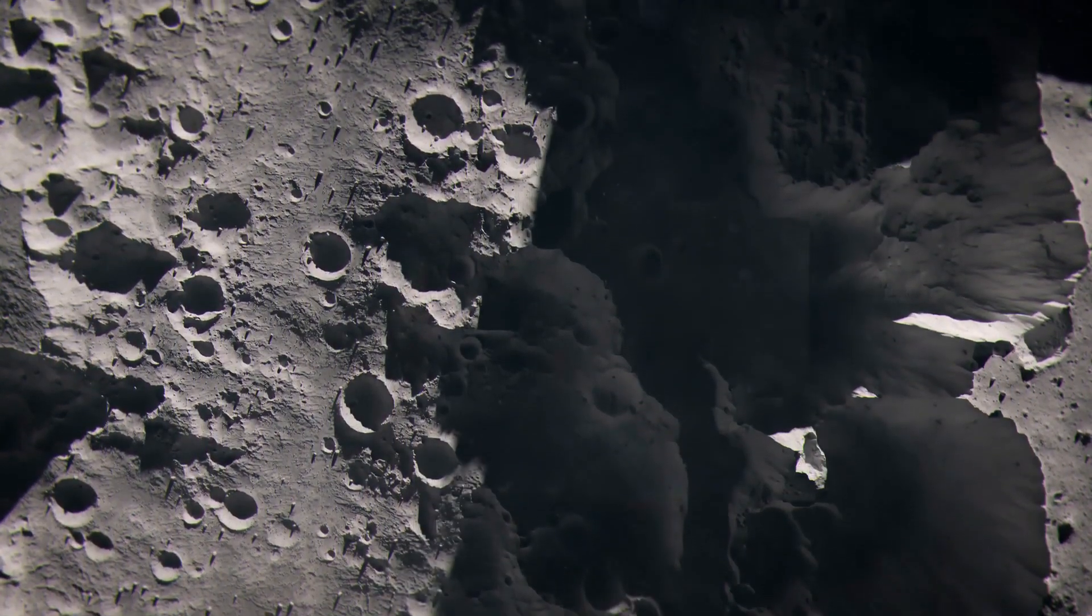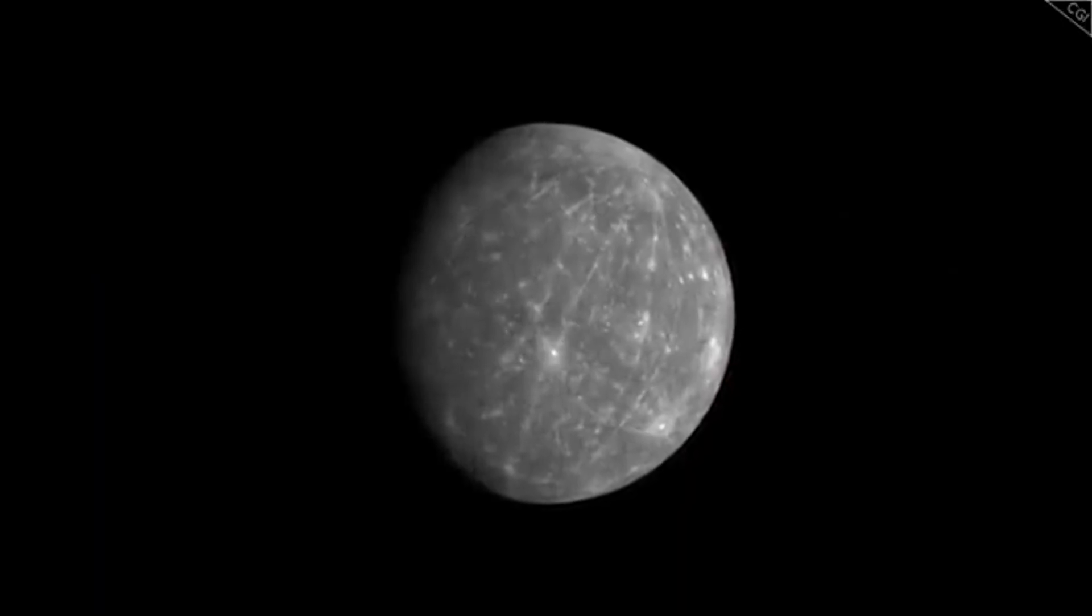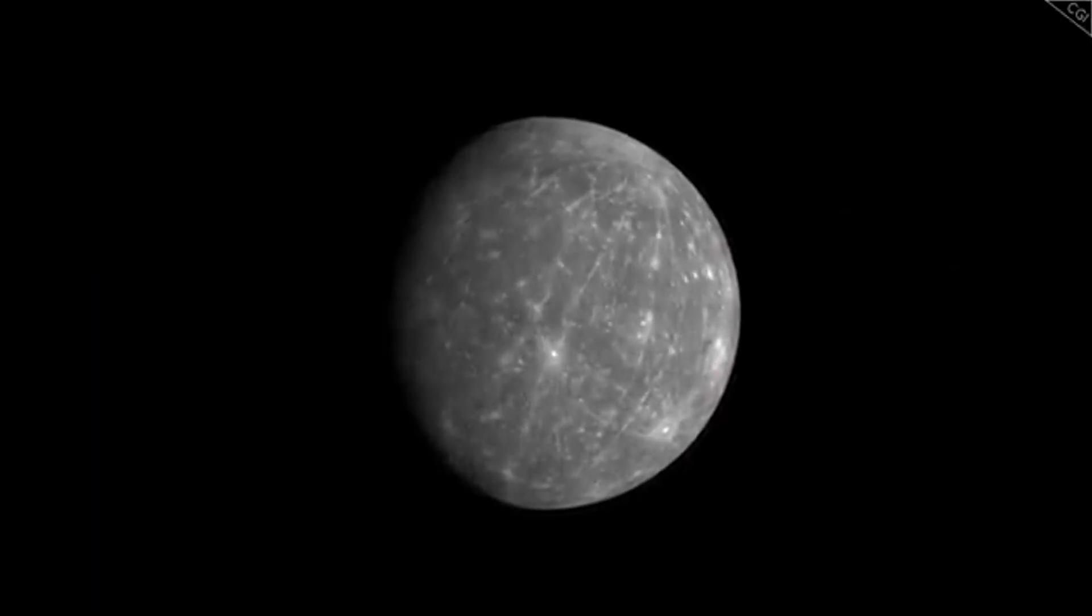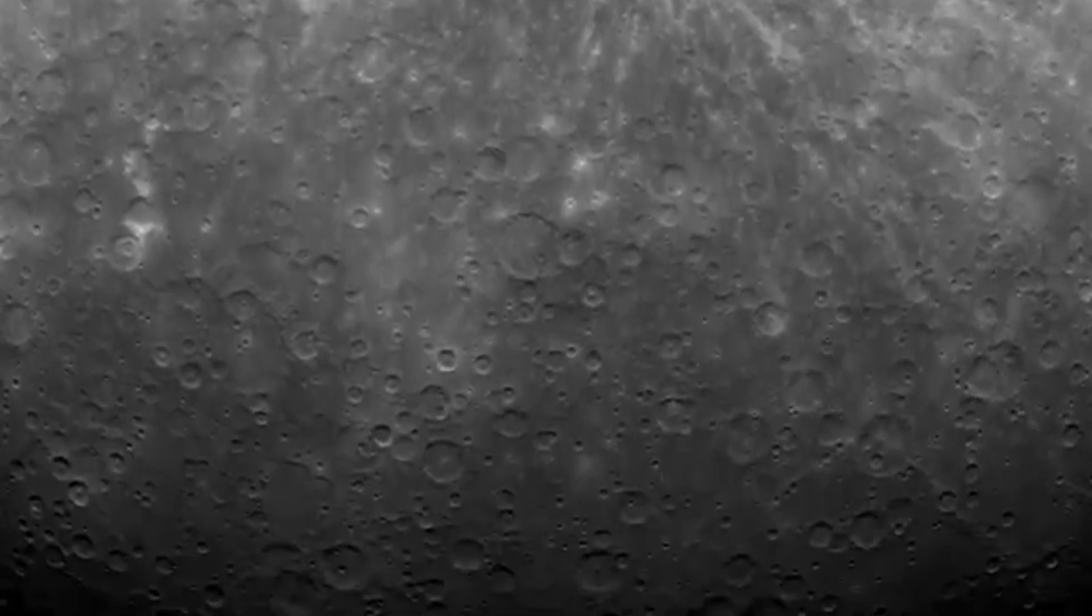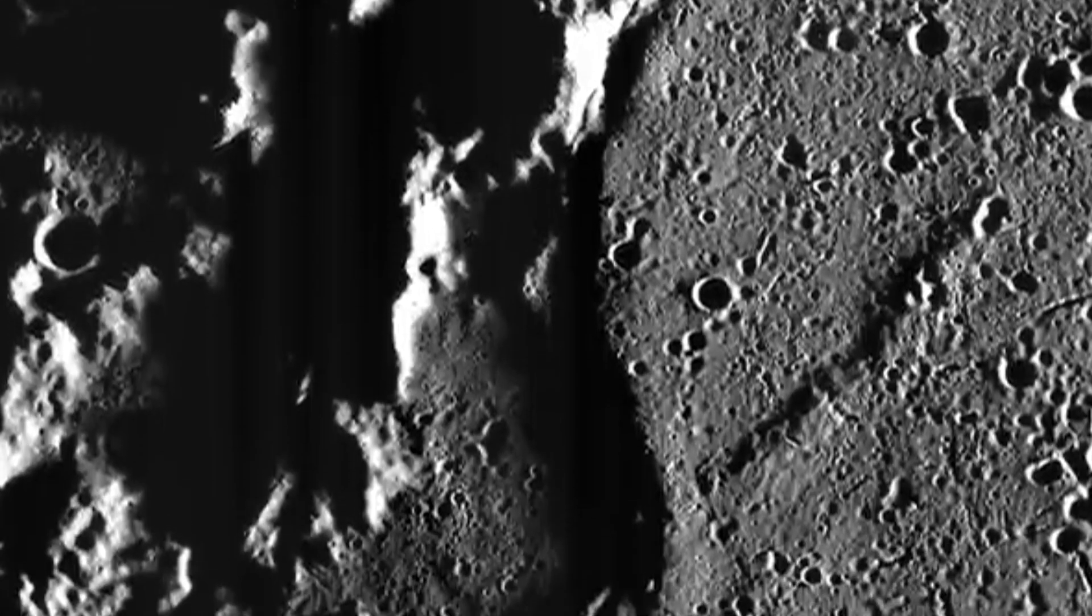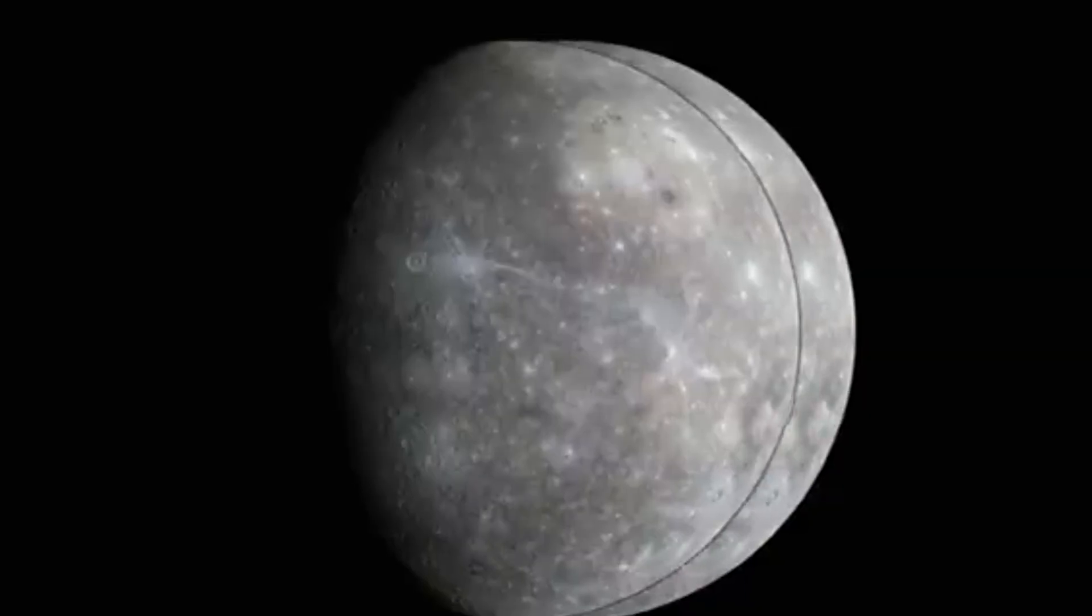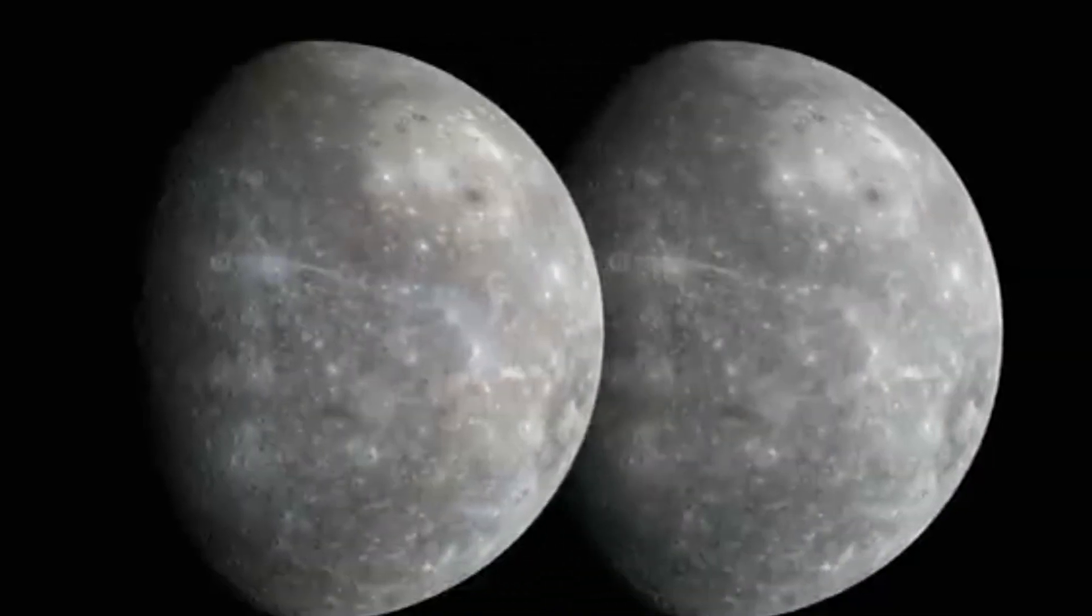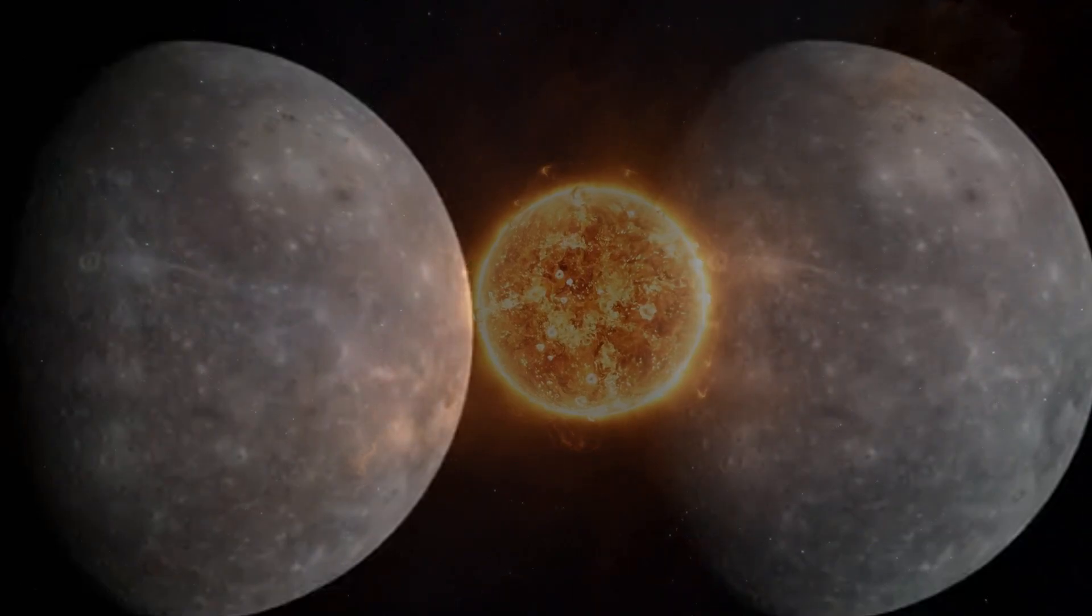One of the most peculiar features of Mercury is its chaotic terrain, a vast expanse of disordered hills and valleys located near the planet's South Pole. This area, roughly the size of Texas, was first observed by the Mariner 10 mission in the 1970s. Dr. Thomas Waters, a scientist at the Smithsonian Institution, suggests that this unique landscape may have formed due to large earthquakes triggered by the sun's tidal forces as Mercury's orbit evolved.